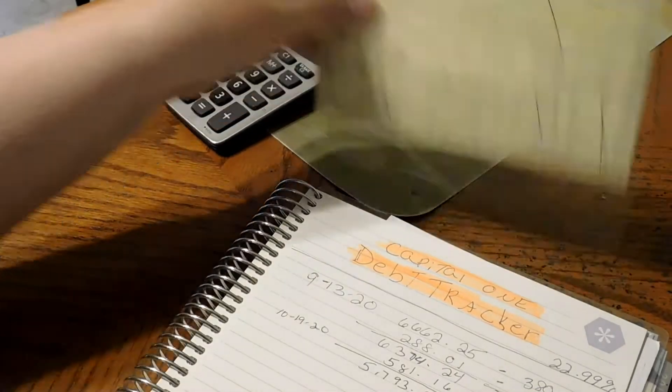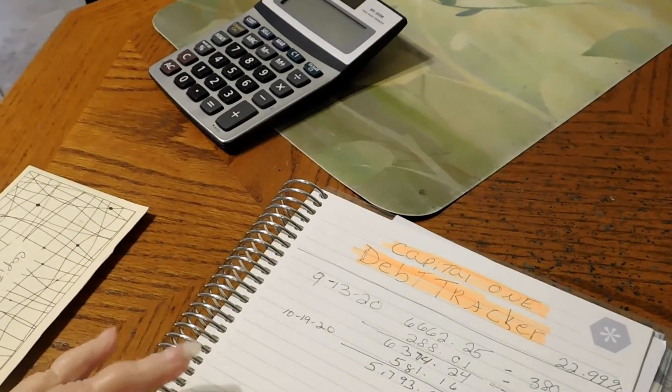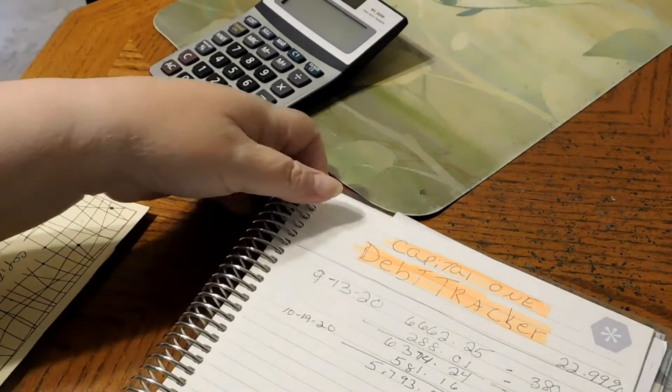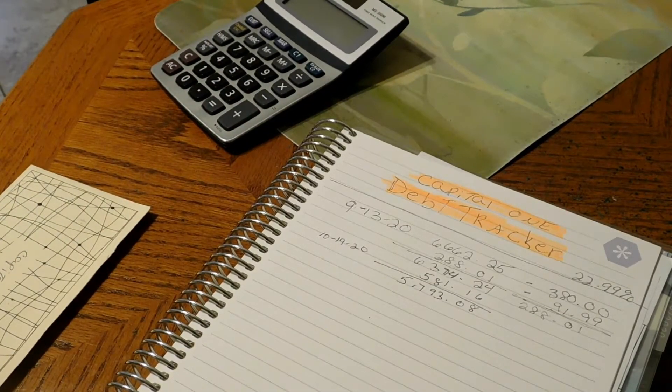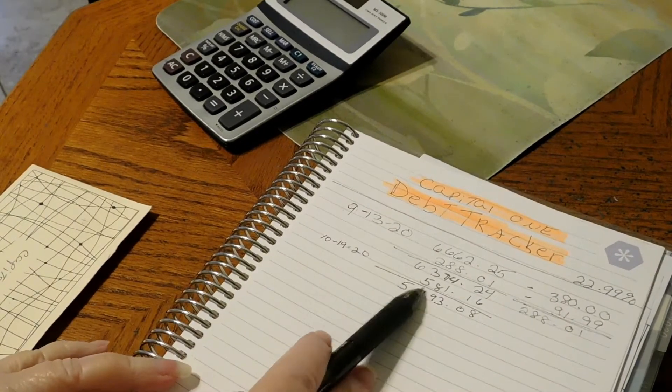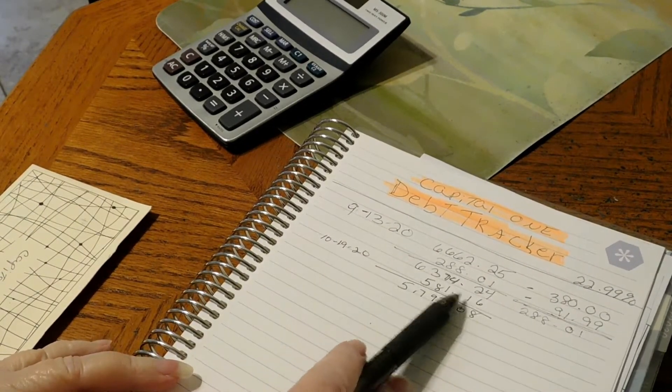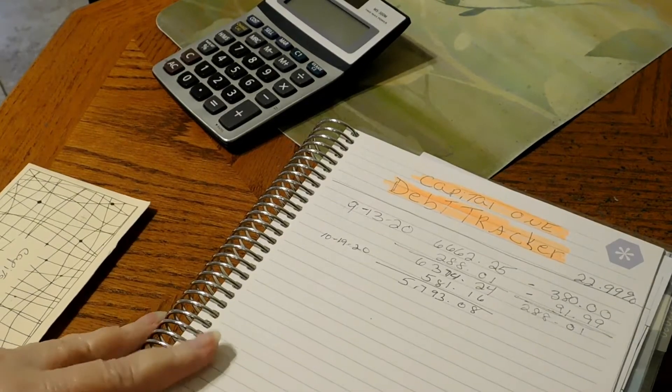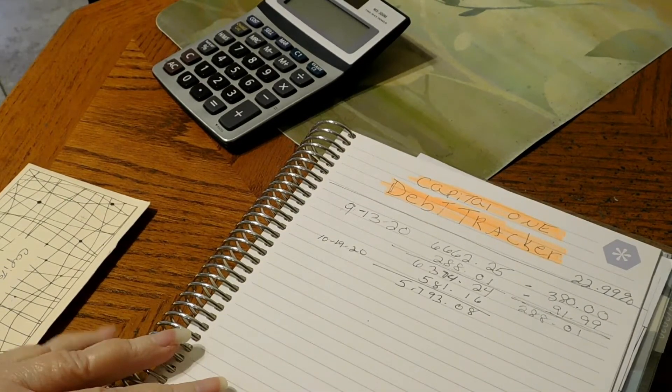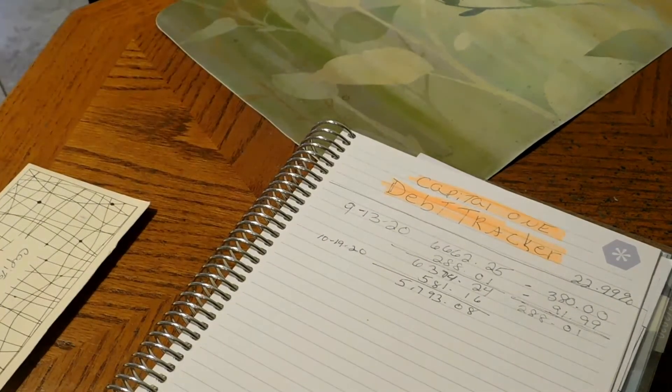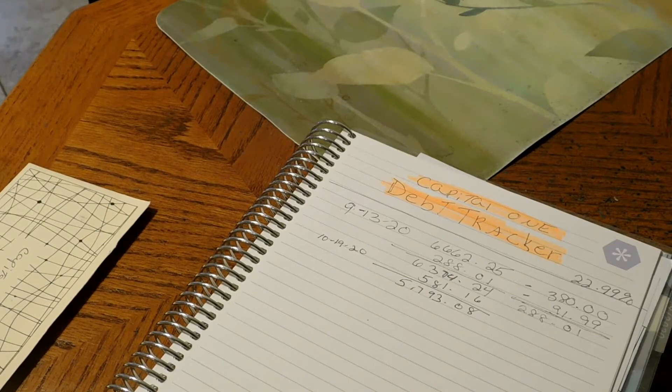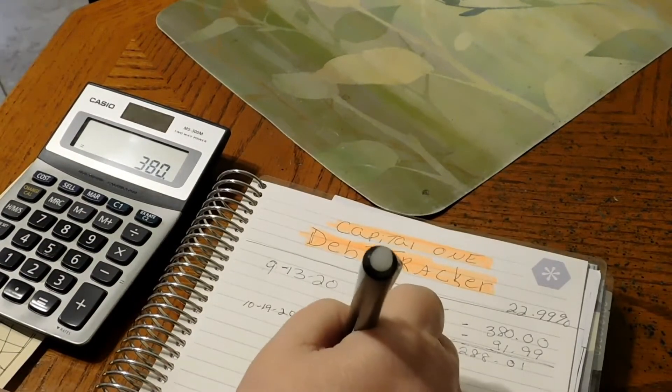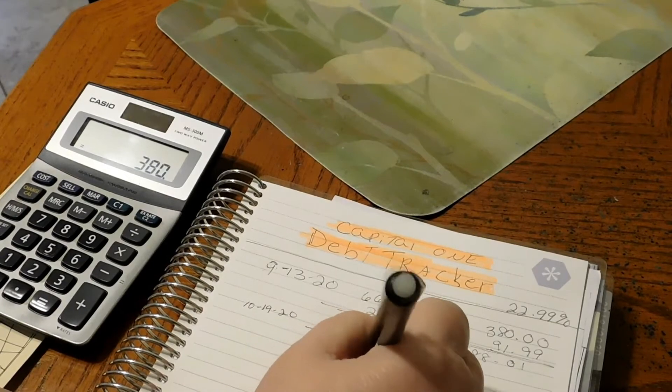Hello everyone, we're gonna update our Capital One tracker for the month of October. So we paid $581.16, and we paid an additional $250 plus $130, so $380.